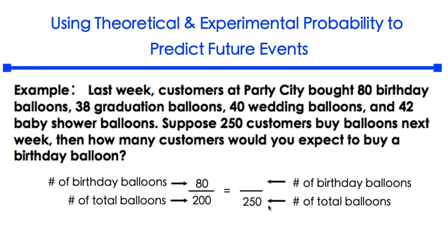We just want to find out, out of these 250 customers, how many of them will buy a birthday balloon, which we don't know. So we will use an assigned variable, capital B. Once you have written a proportion, you'll be using cross-multiplication to solve.